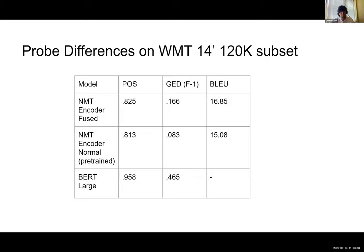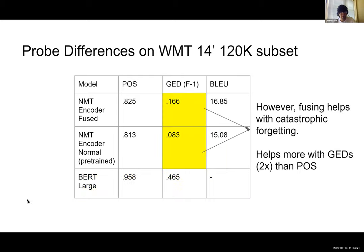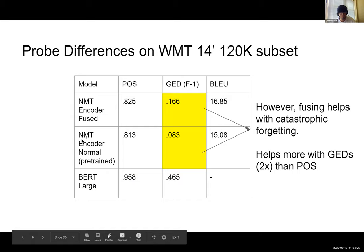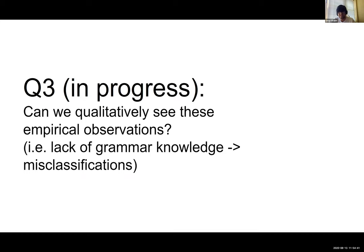We ran another smaller set of probing tasks on a subset of WMT14 and looked at downstream task performance again. The original BERT-large embeddings are significantly better than the rest on downstream tasks. However, the fused model performs better than a normal pre-trained model on grammatical tasks, and this increase in grammatical performance is of higher magnitude than on other downstream tasks — providing some quantitative evidence for the catastrophic forgetting theory.